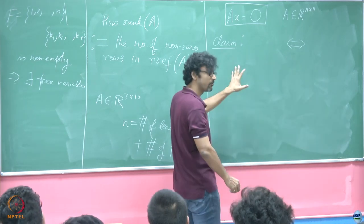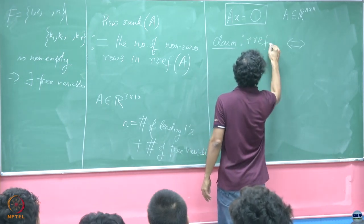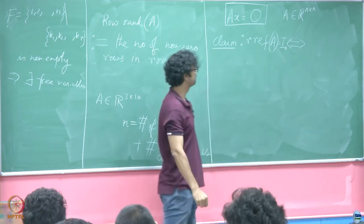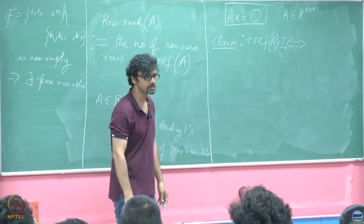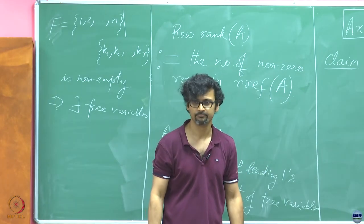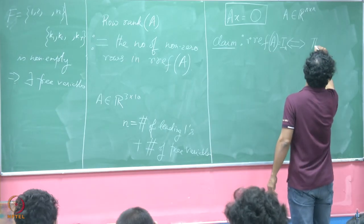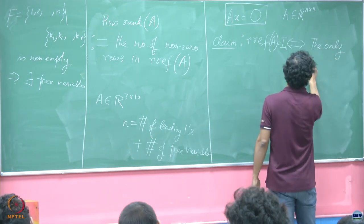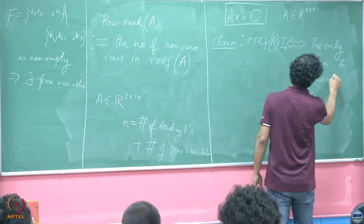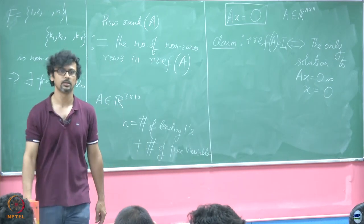So what I am going to claim is the following: suppose we have RREF(A) = I, where A is a square matrix. RREF being the identity means it has no zero rows — every row has a leading one. This is tantamount to saying that the only solution to Ax = 0 is x = 0. This is a very important result.